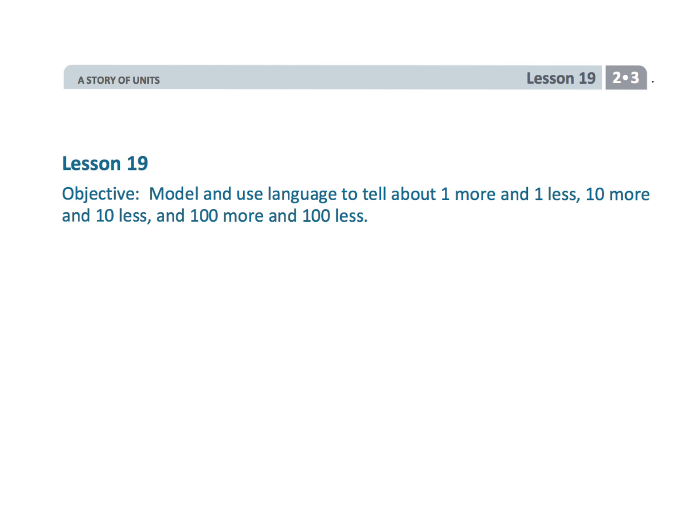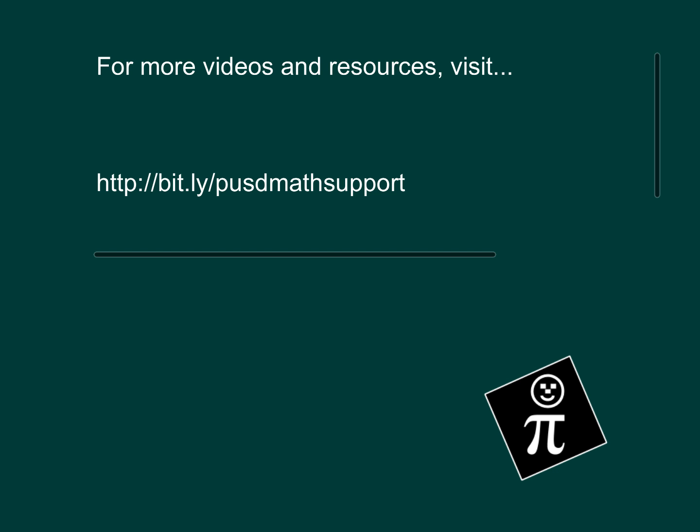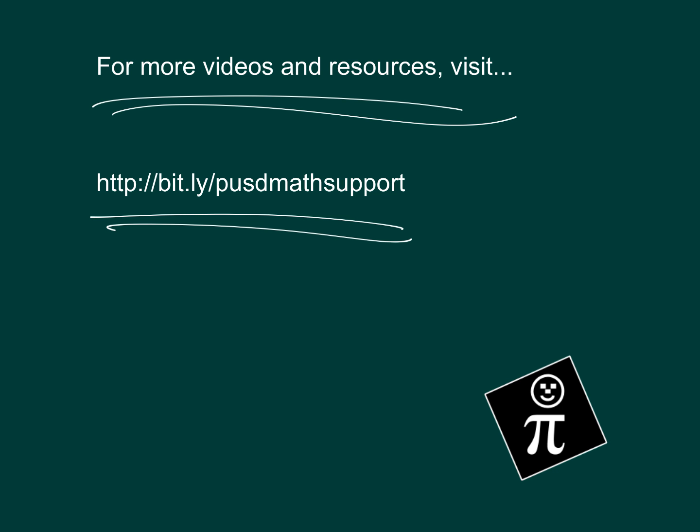That wraps up second grade module 3 lesson 19, where the students are modeling to talk about one more, one less, 10 more, 10 less, and 100 more and 100 less. Okay, I'm going to apologize, I'm sorry, because I do have a gadget in now. I haven't called me now.